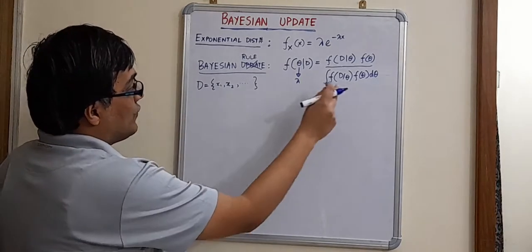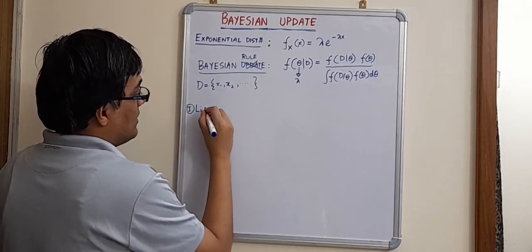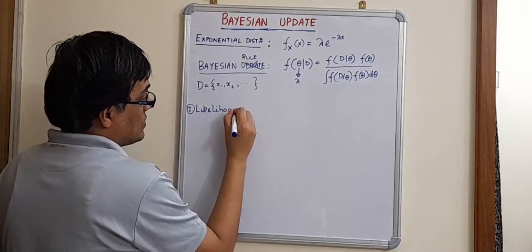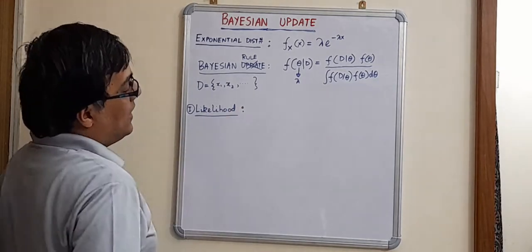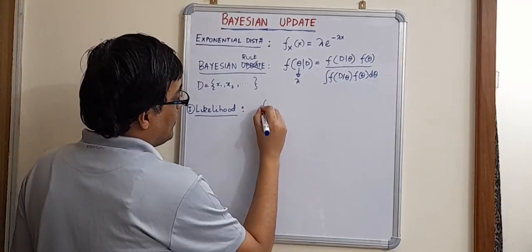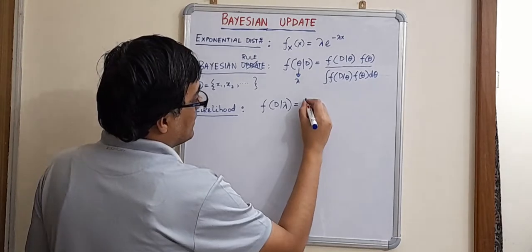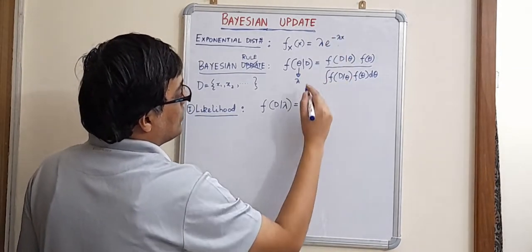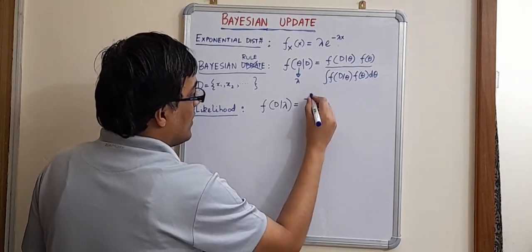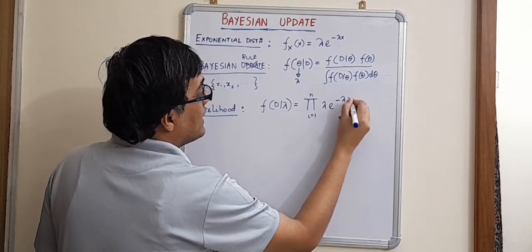So first thing, first step is finding the likelihood. That is step one. Step one is likelihood. Please check the spelling of likelihood. I think this is correct. The likelihood would be given by f d given lambda. So the likelihood function would be written as the product of, that is product of i equals 1 to n, lambda into e to the power minus lambda xi.